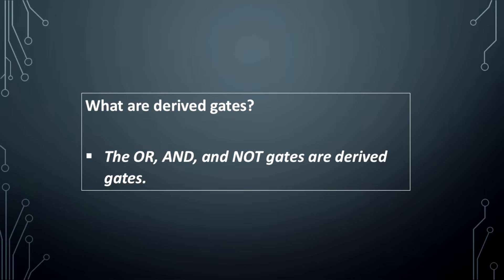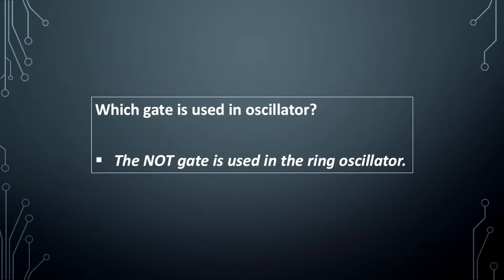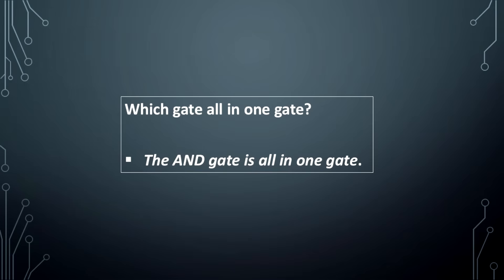What are derived gates? The NAND and NOR gates are derived gates. Which gate is used in oscillator? The NOT gate is used in the ring oscillator.